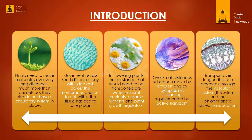Fourth point: over small distances, substances move by diffusion and by cytoplasmic streaming, supplemented by active transport. Fifth point: transport over longer distances proceeds through the vascular system - the xylem and the phloem - and is called translocation.